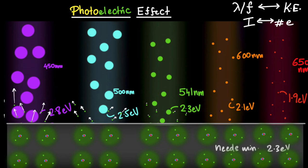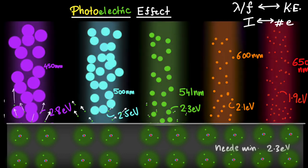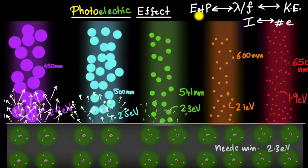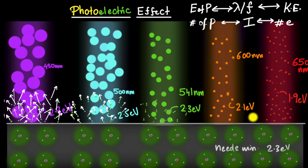What about intensity? In the photon model, increasing intensity simply means increasing the number of photons. If a single photon doesn't have enough energy, it doesn't matter how many photons you shine — you still won't get photoelectric effect. But if photons do have enough energy, shining more of them means more electrons can absorb that energy and escape per second, giving more electrons out. So: wavelength and frequency decide the energy of each photon, which determines the kinetic energy and whether photoelectric effect occurs. Intensity determines the number of photons, and therefore the number of electrons emitted.